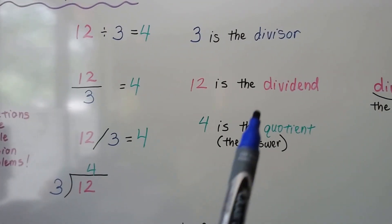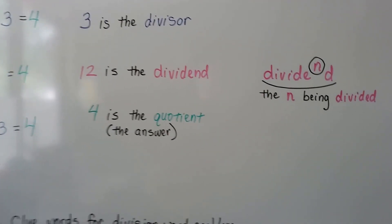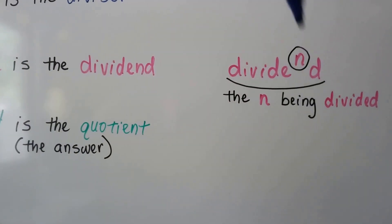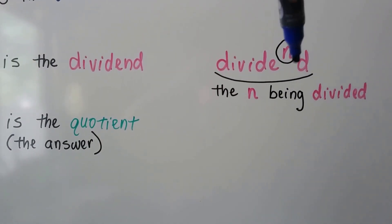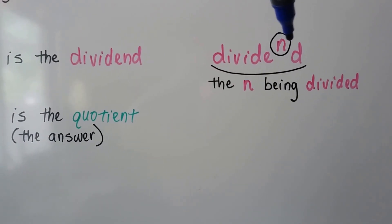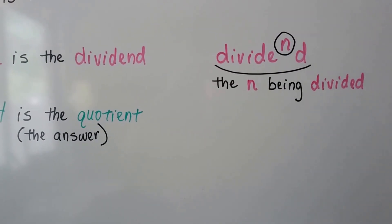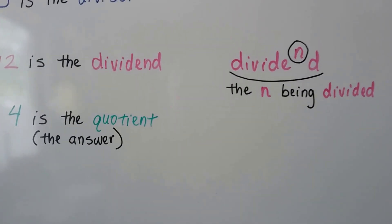Now if you want to remember the divisor and the dividend, the 12 is the dividend. And an easy way to remember it is, it's got an 'n' here, doesn't it? The 'n' is being divided. If you lift this 'n' up, you can say the number is being divided. That's the dividend. It's the number that's being divided.